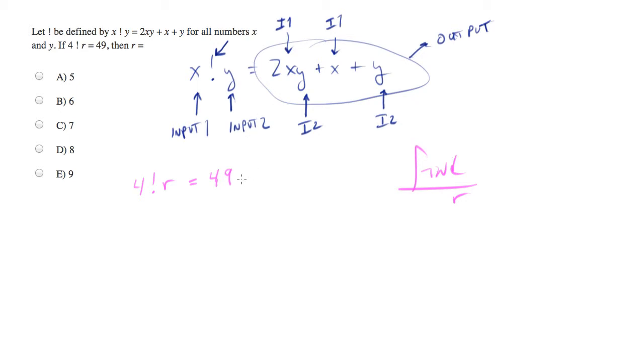Well, let's simply plug in. Input 1 is 4, so anywhere where we have an x, I'm going to plug a 4. So let's do 2 times 4. And anywhere where we have a y, I'm going to put an r. Plus 4 plus r equals, and this is the output, 49.